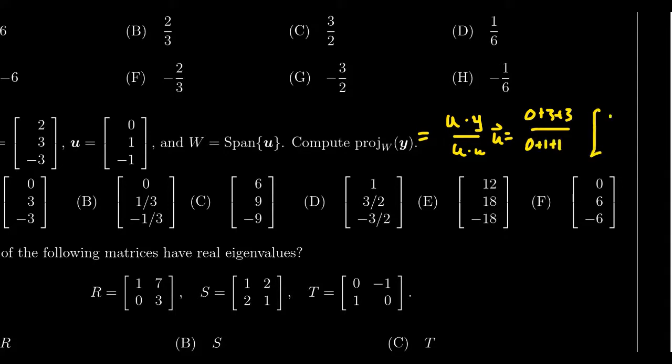And then we times that by zero, one, and negative one. Simplifying the scalars, we're going to end up with six over two times zero, one, and negative one. If we simplify the fraction, of course that's just three.